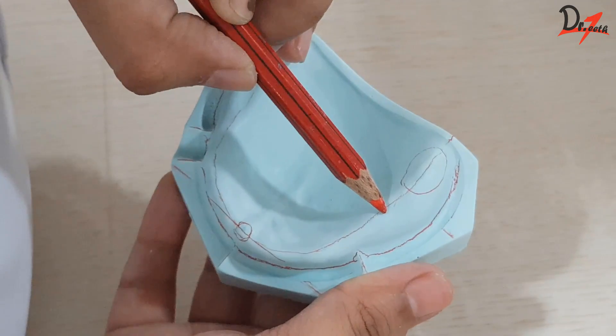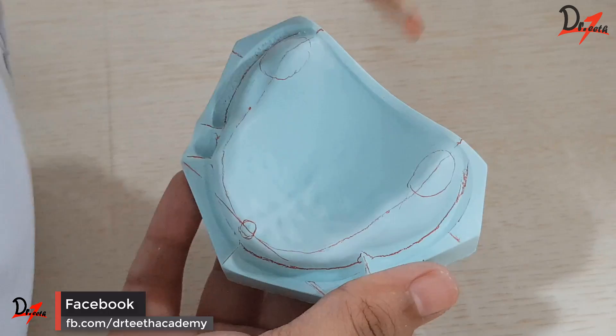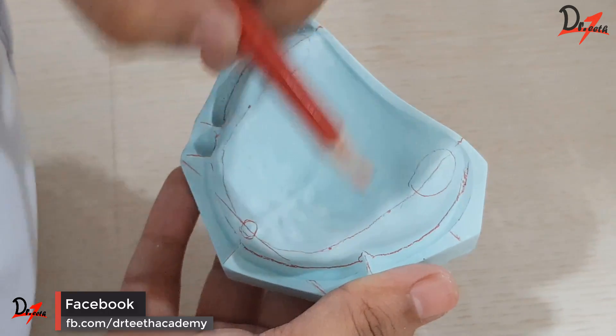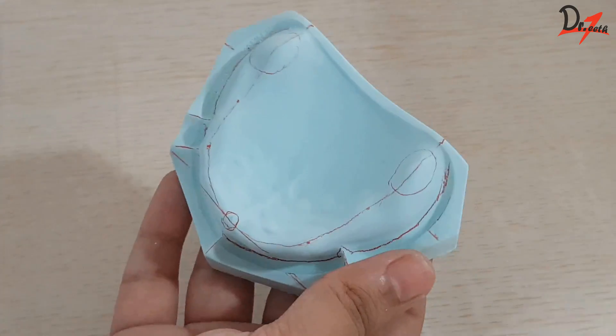Now we will extend the line from the crest of the ridge on the anterior surface of the cast. That will help us in making the occlusal rim and setting up our posterior teeth.